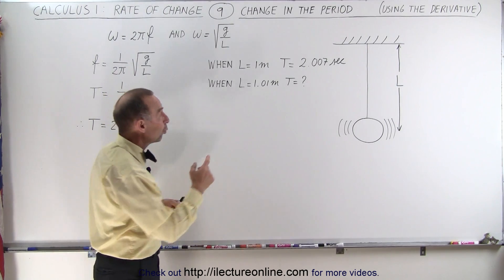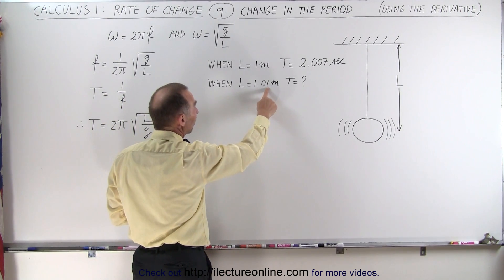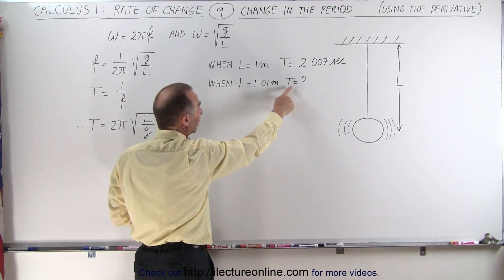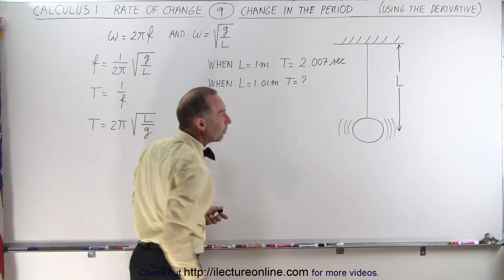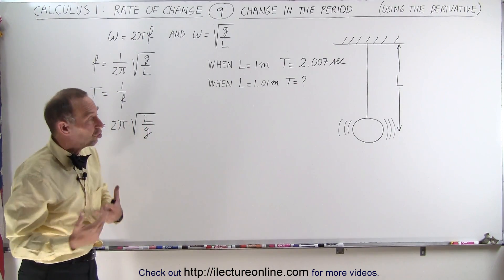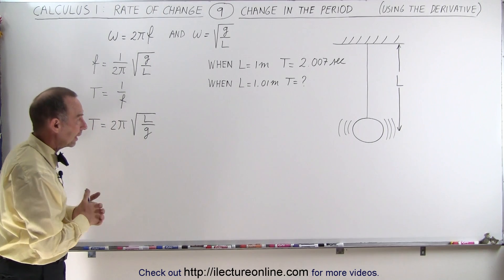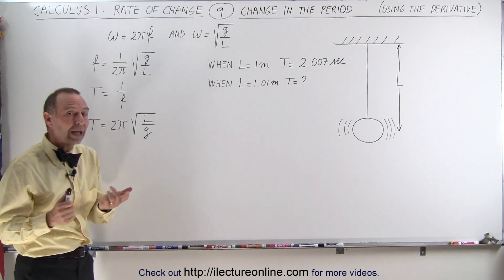So when L is just 1 centimeter more, 1% greater than before, how will that affect the period? How big will the period be? So we have to find the change in the period and then we can calculate the new period. To do that, we're going to start with the change in the period with respect to the length.